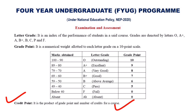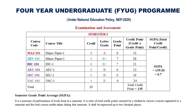So what is a credit point? Credit point is the product of the grade point obtained in a paper and the number of credits for that paper or course. The credit points obtained in all the papers in a semester are added together to get the total credit point.